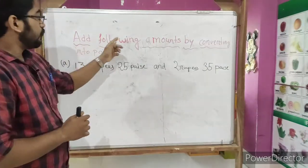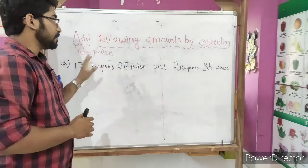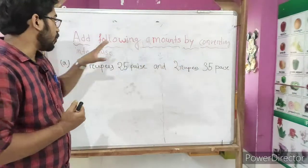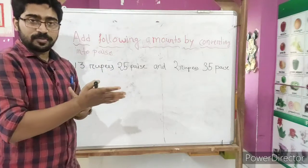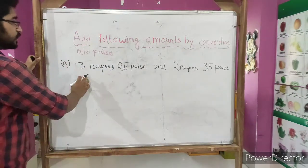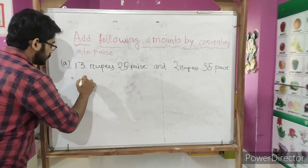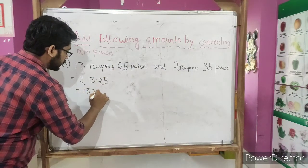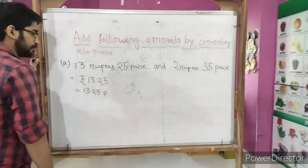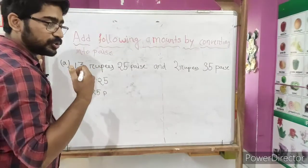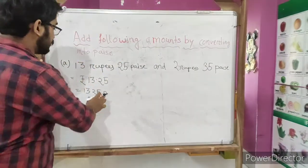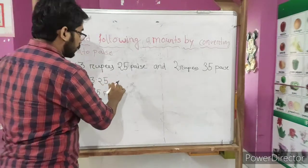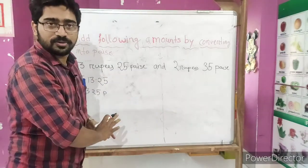We will at first see the instruction and after that we will attempt. Add following amounts by converting into paise. So add following amounts by converting into paise. See, 13 rupees 25 paise we can write as rupees 13.25 equals to 1325 paise. No need to do the calculation step by step as we all know how to do it in a simple way or in one line. We will do this for this example.